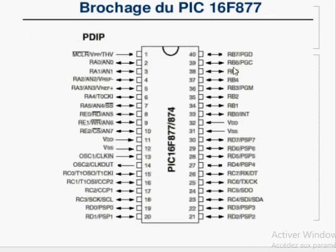Cette figure montre le brochage externe du circuit 16F877. Il est constitué de 40 broches. Ce nombre vient du nombre de lignes d'entrée-sortie qui est de 33, plus l'alimentation, la masse, l'oscillateur et la réinitialisation.